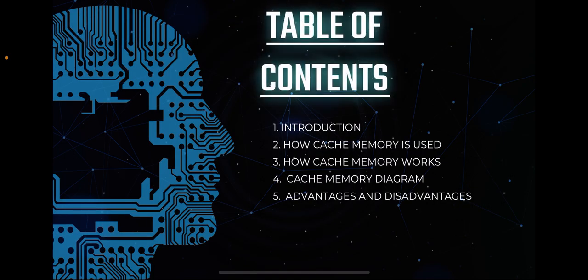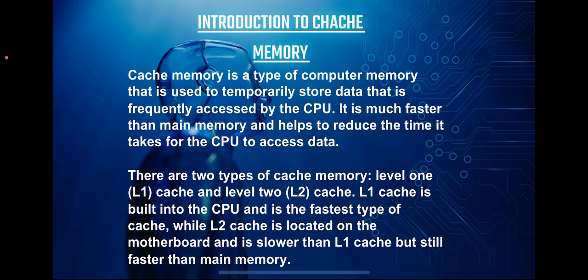Cache memory is a type of computer memory that plays a vital role in enhancing the overall performance of our machines. It acts as a temporary storage space for data that is frequently accessed by the CPU, or central processing unit. Its primary purpose is to reduce the time it takes for the CPU to access this data, thus optimizing the system's speed and efficiency.